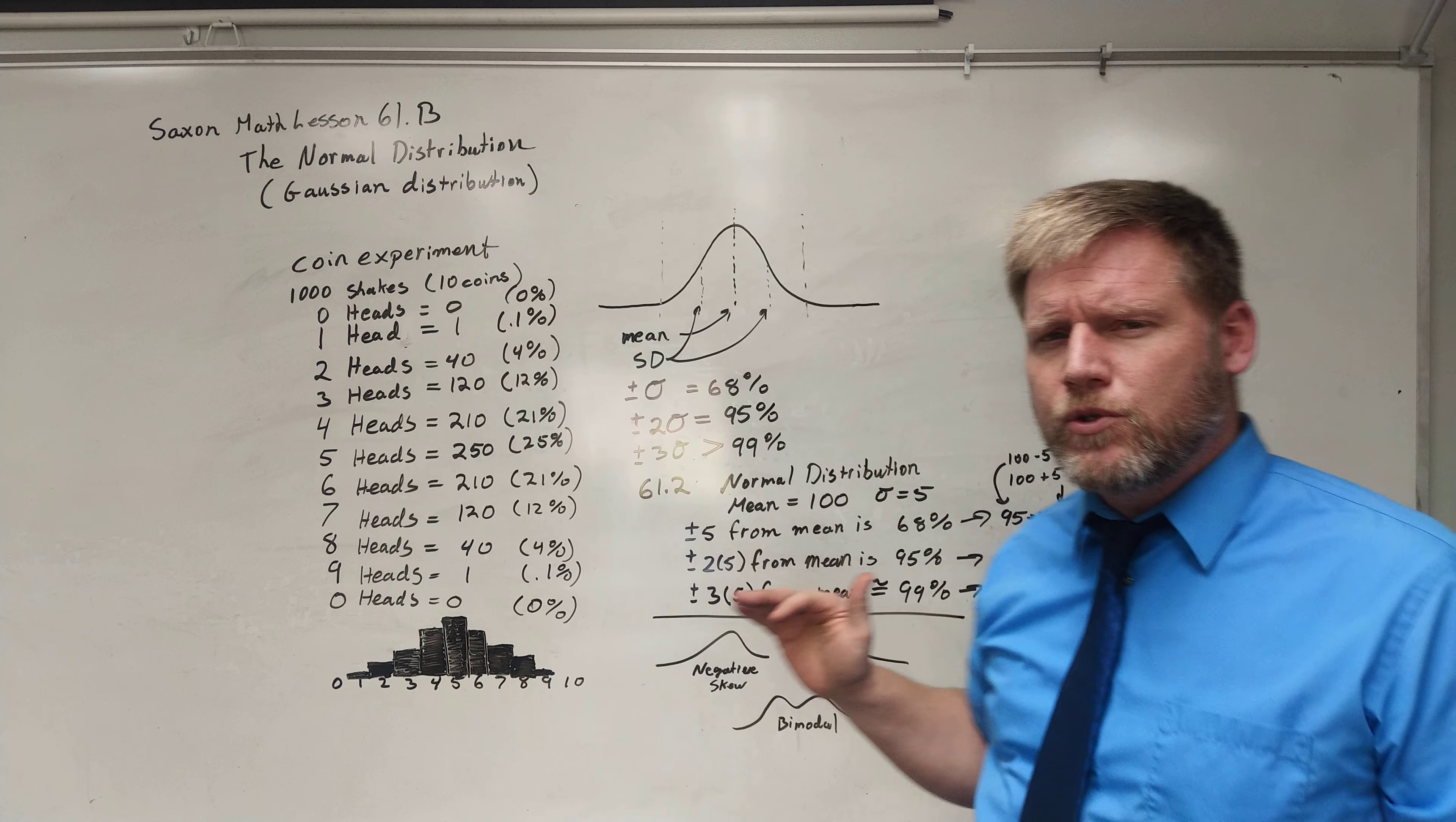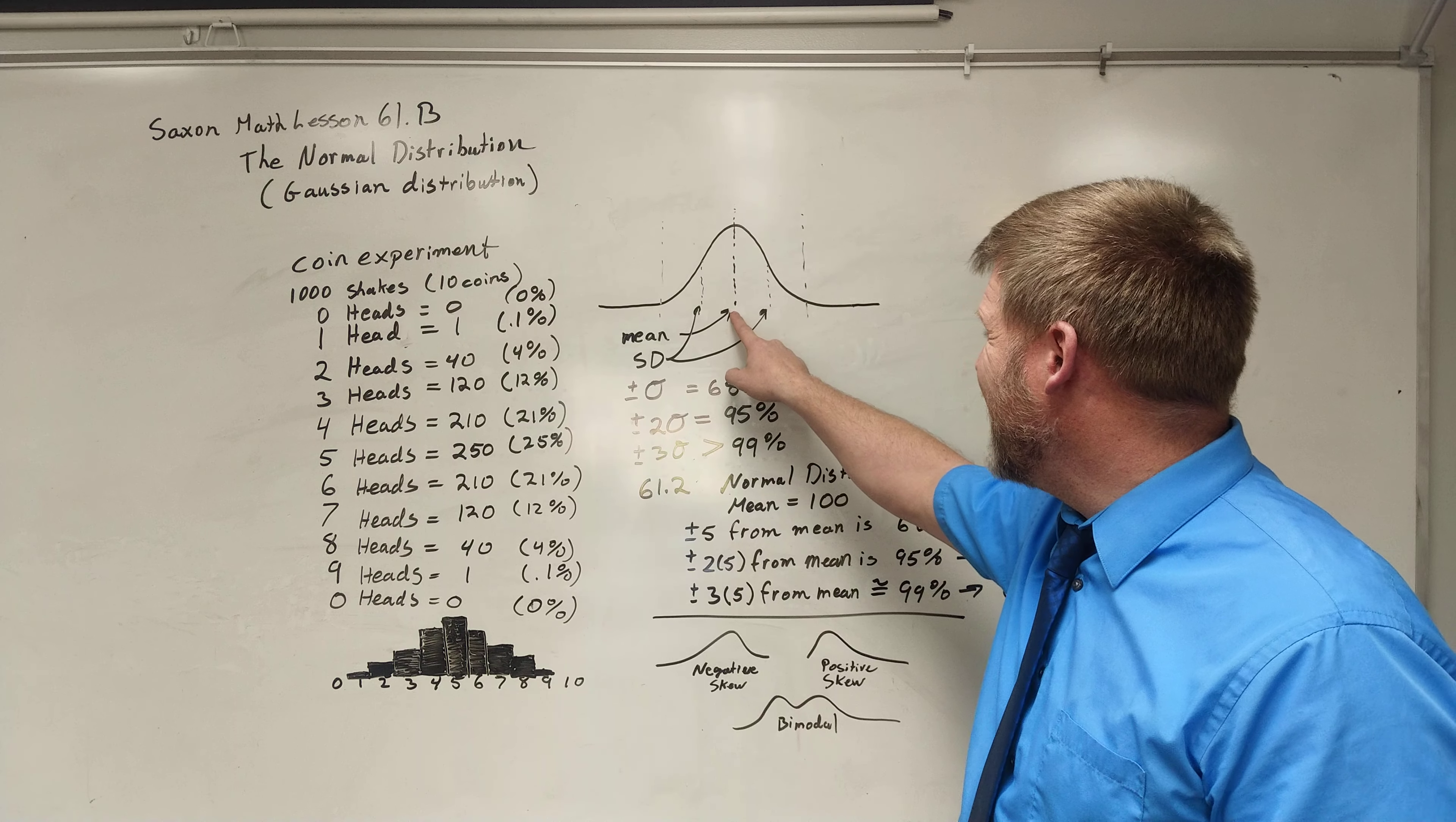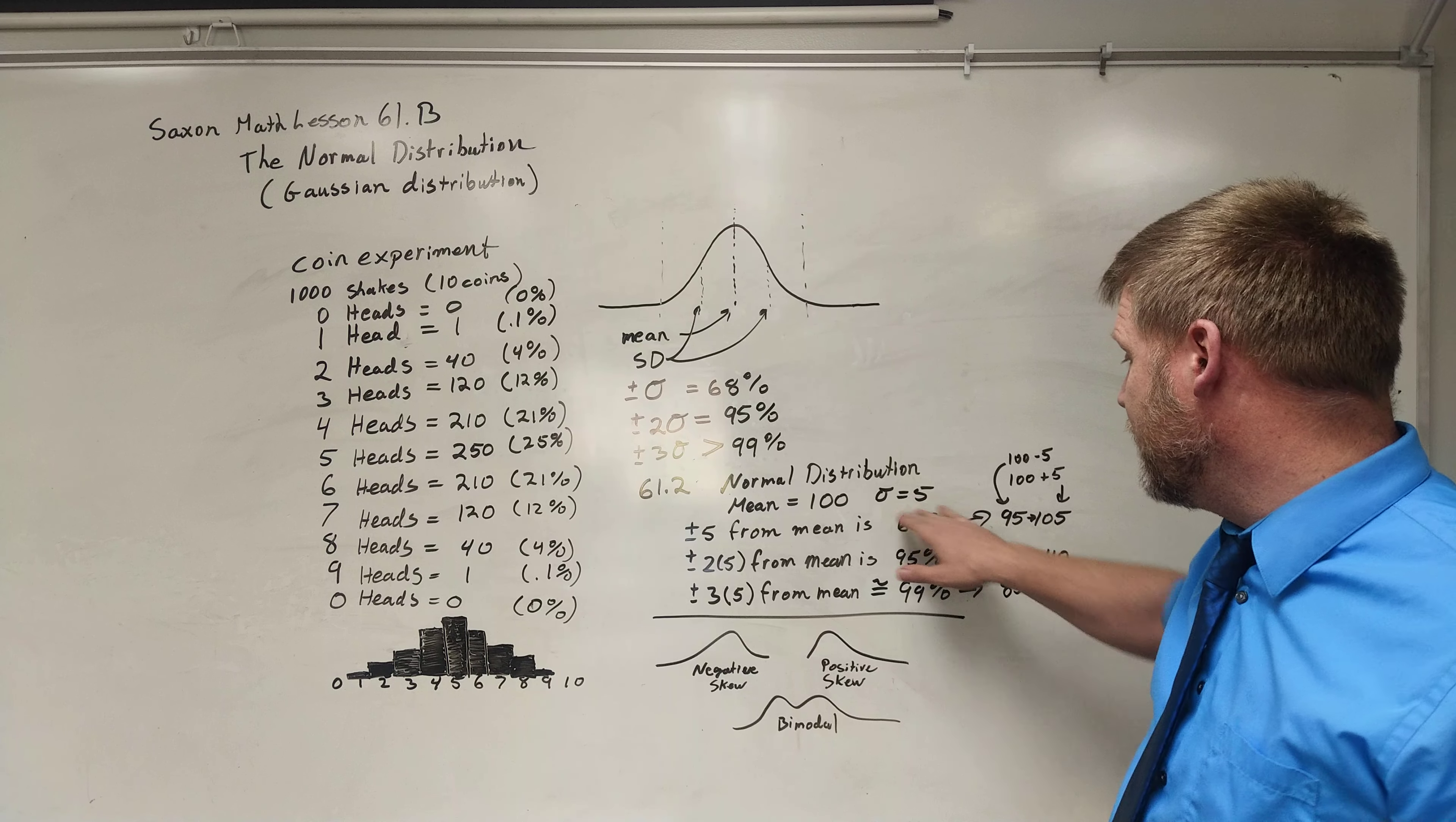Now, let's look at 61.2 and we'll see how this works in an actual problem. They said that they have a normal distribution with a mean of 100. So we know the average is right there at 100. And they said one sigma or one standard deviation is five units away. If this is 100 and this is five more than that, that's going to be 105. If this is 100 and that's five less than that, it's going to be 95. So within one sigma, I'm going to have 68% of my data between 95 and 105.